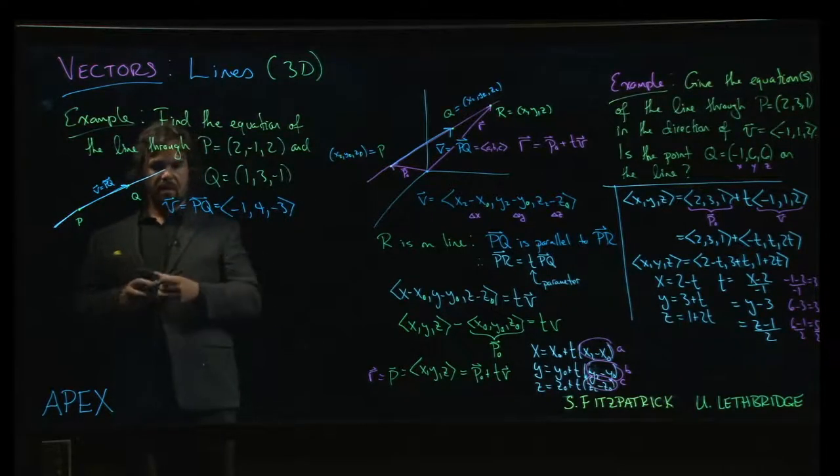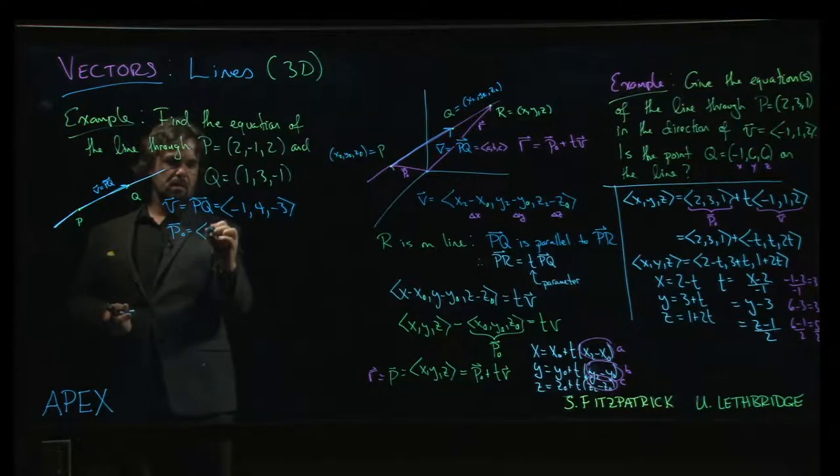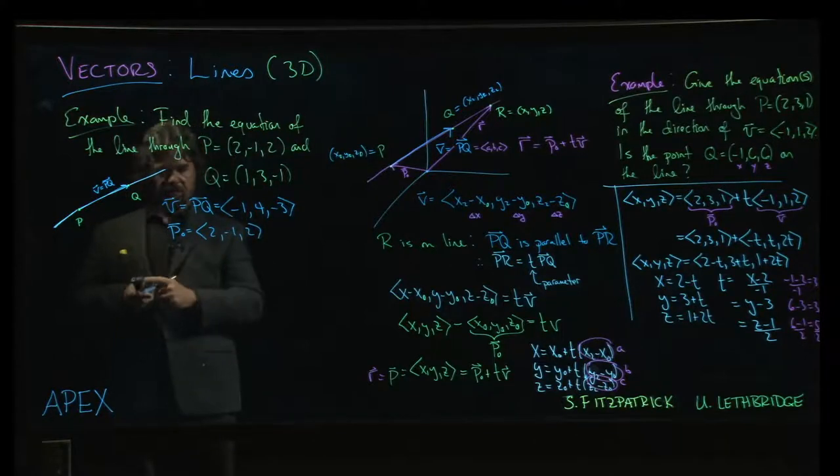But we've got the vector, and we'll take p0 to be the point P: 2, minus 1, 2. If you wanted to use Q instead, go ahead, you're not wrong. You can do it that way too.